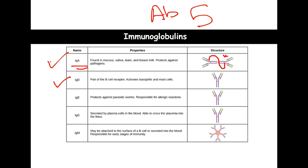The next one is IgD. There are still some questions circulating around it — we know it's part of the B cell receptor and there is some role in activation of basophil and mast cells, so they may have a role in allergies, but that's not its main role and there's still a lot being studied about it. The next one is IgE — this type is responsible for allergic reactions and also provides some protection against certain types of parasites.